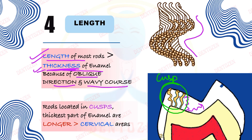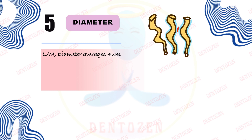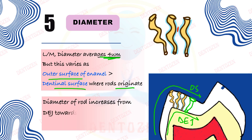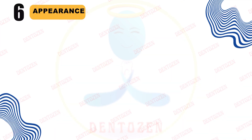Next is the diameter of enamel rods. Under the light microscope, the average diameter is 4 micrometers, but this is not constant — it varies because the outer surface of the enamel is greater than the dentinal surface where the rods originate. As the rods move from the dentino-enamel junction towards the outer surface, their diameter increases. The ratio of diameter at the dentino-enamel junction to that at the enamel surface is about 1:2 — an important entrance or viva question.